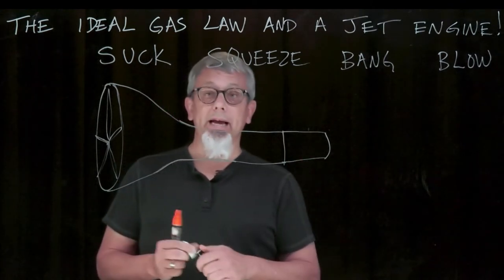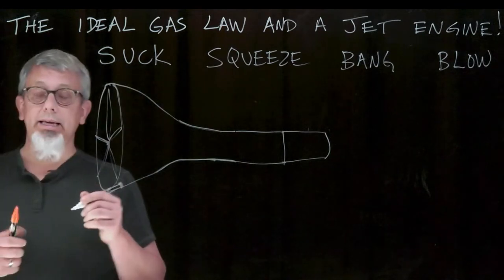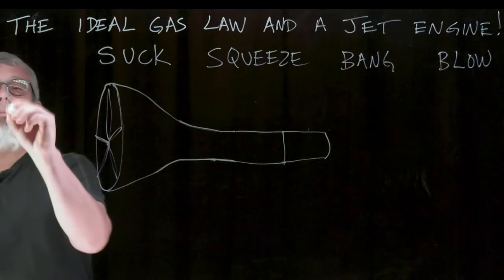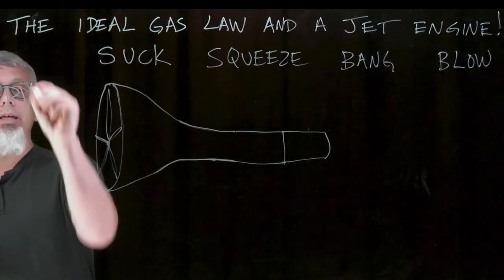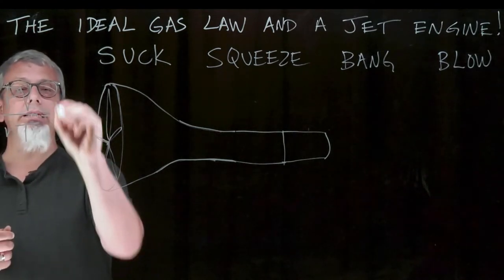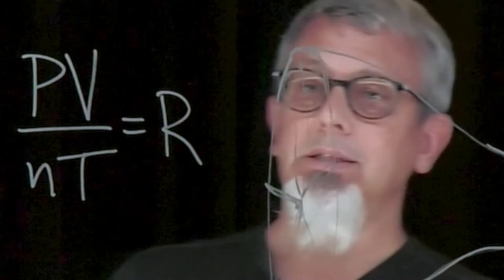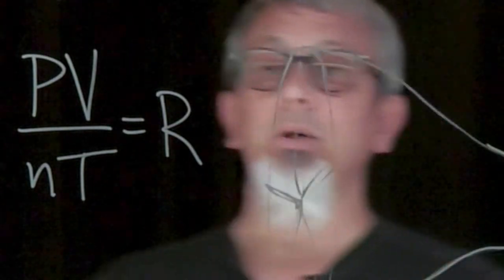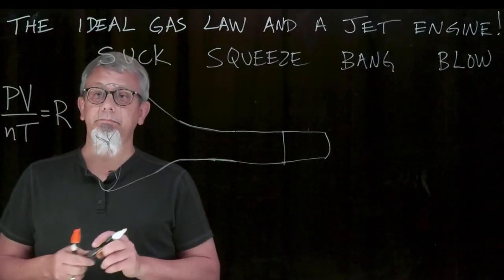First of all, let's recall the ideal gas law. Normally it's PV equals NRT, but I'm going to rewrite it this way as a ratio. So PV over NT is equal to some constant, where our values are our pressure, our volume, our amount of gas, and our temperature.